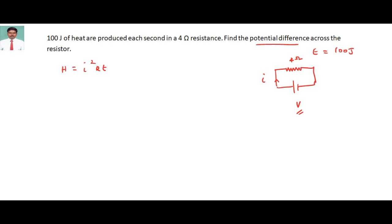The heat energy generated in terms of current, resistance and time is given by Joule's law: H = I²Rt. The heat produced H is 100 joules.